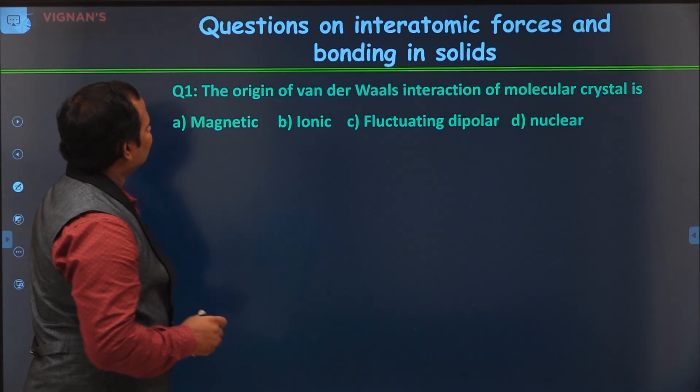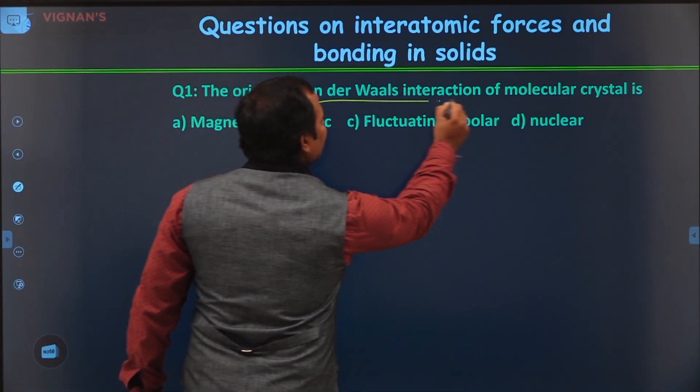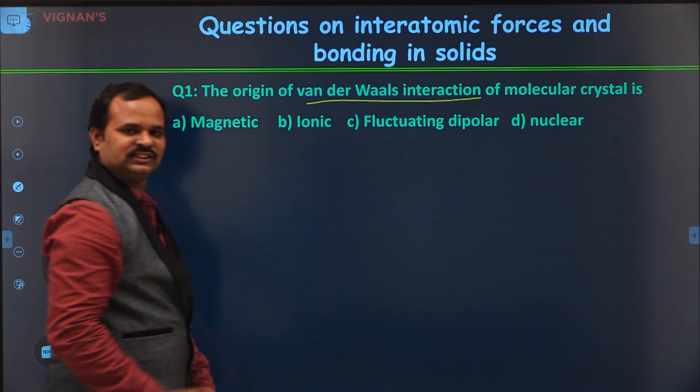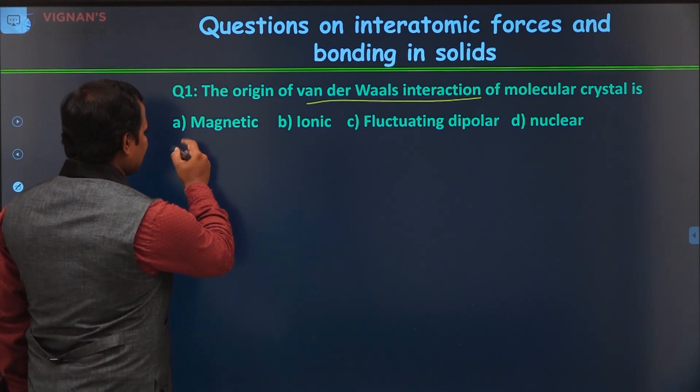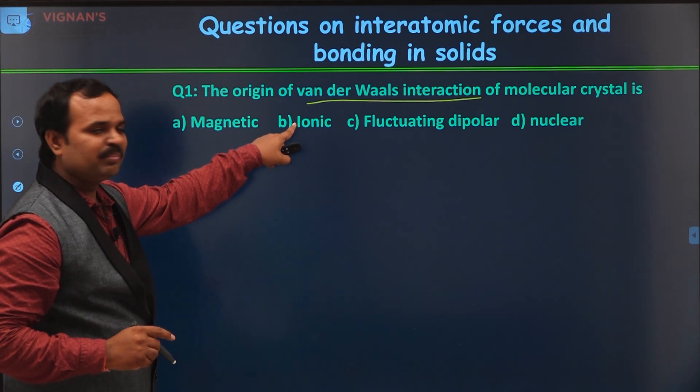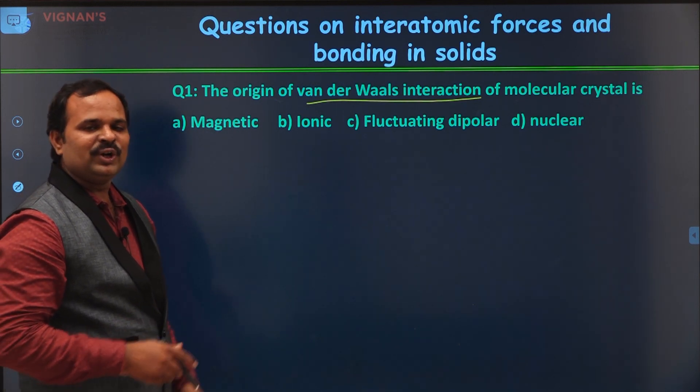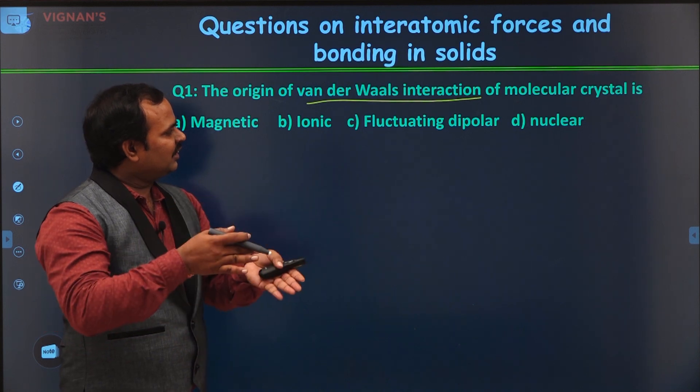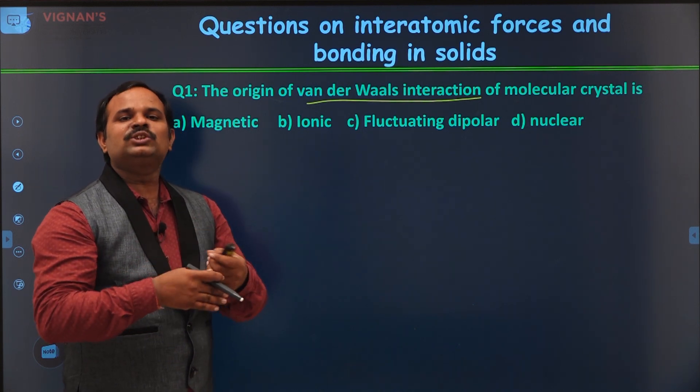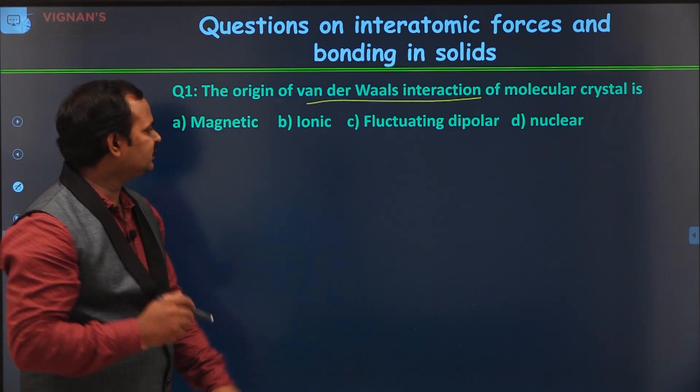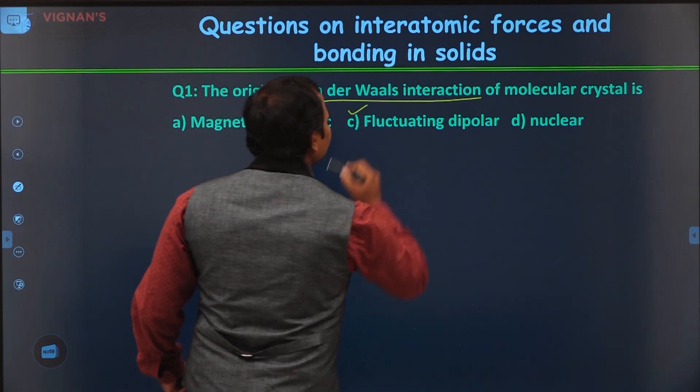Question number one, the origin of the van der Waals interaction of molecules in a crystal is: magnetic, ionic, fluctuating dipolar, or nuclear. We know that already, the van der Waals interaction is always through a dipole interaction. So the answer is fluctuating dipolar.